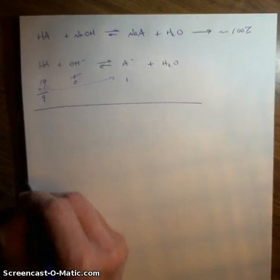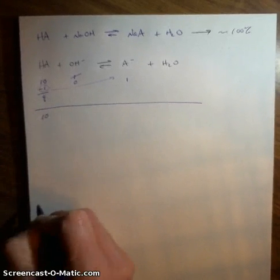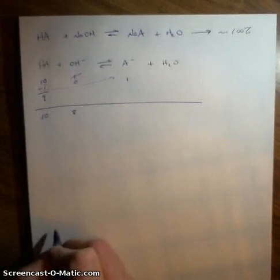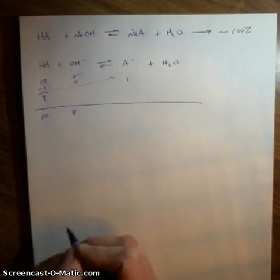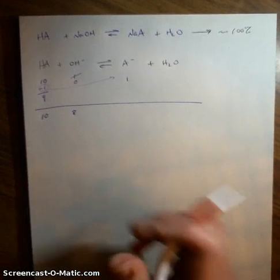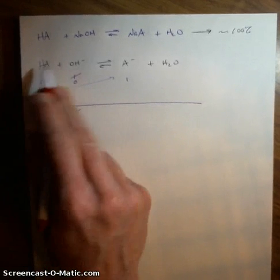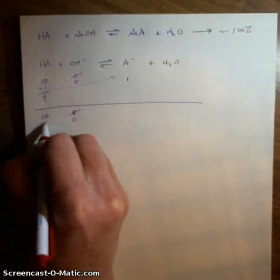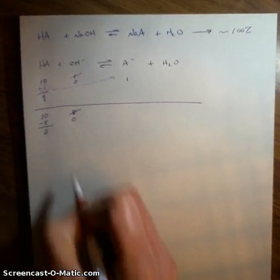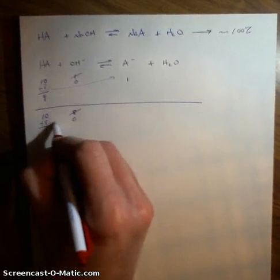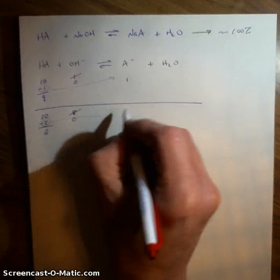Another example: if I start with 10 of the acid and add 8 hydroxides, the strong base reaction goes to 100%, using up all the hydroxide. Because it's 1 to 1, I use 8 of the acid, leaving 2. Where did they go? Those 8 became the conjugate base.